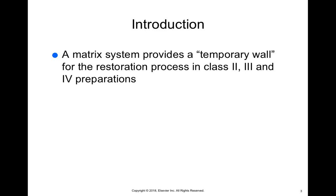The matrix system is used to provide a temporary wall for the restoration process in class two, three, and four preparations. These matrix systems are very important because without them we would not be able to build up these walls. If we were to place the material without a matrix, the composite or amalgam will just flow out.